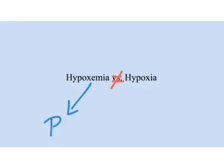Hypoxemia refers to a low PaO2. This can be directly measured on an arterial blood gas. Hypoxemia is a low arterial oxygen tension, or a low partial pressure of oxygen in the blood. This will be important later.